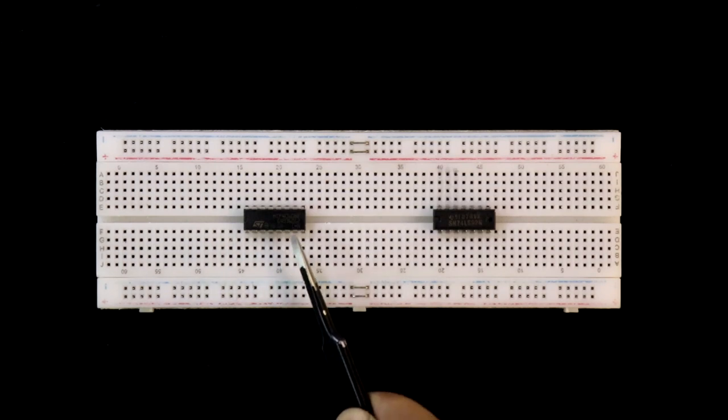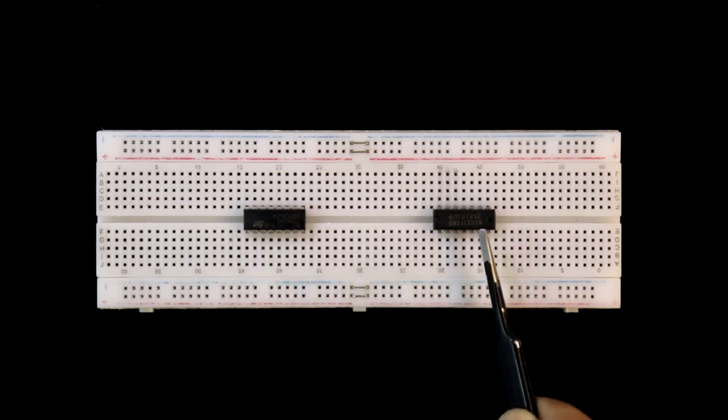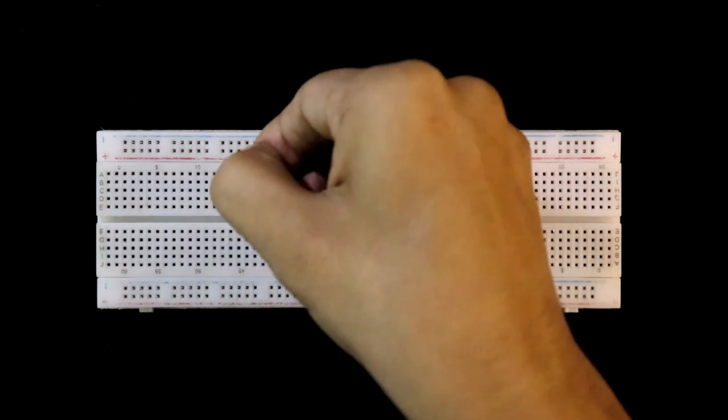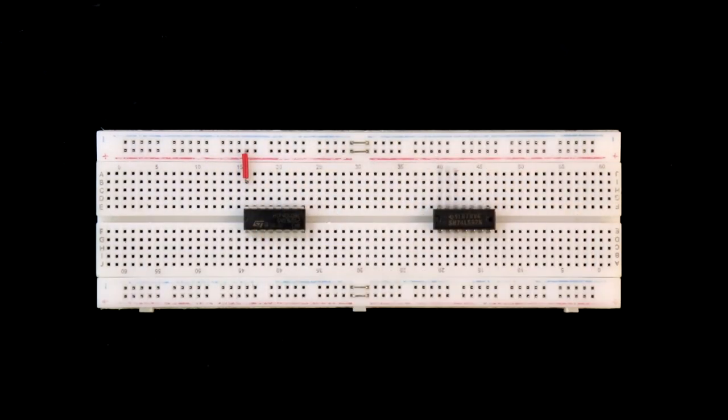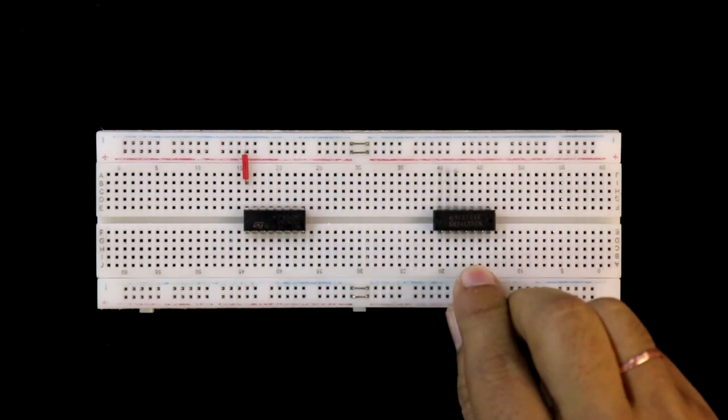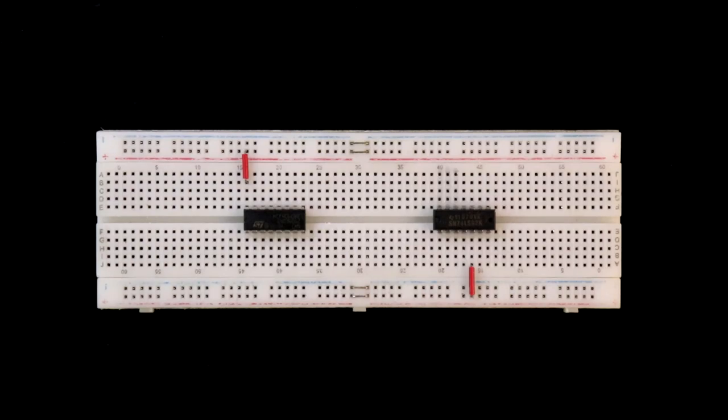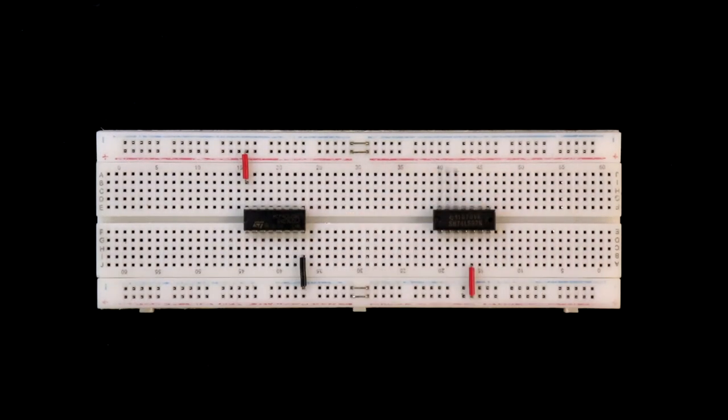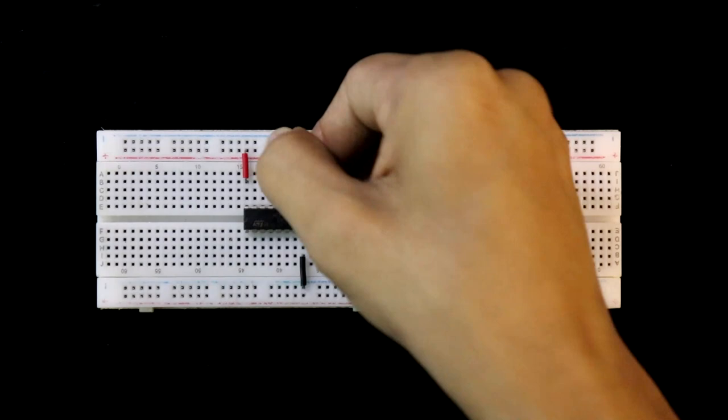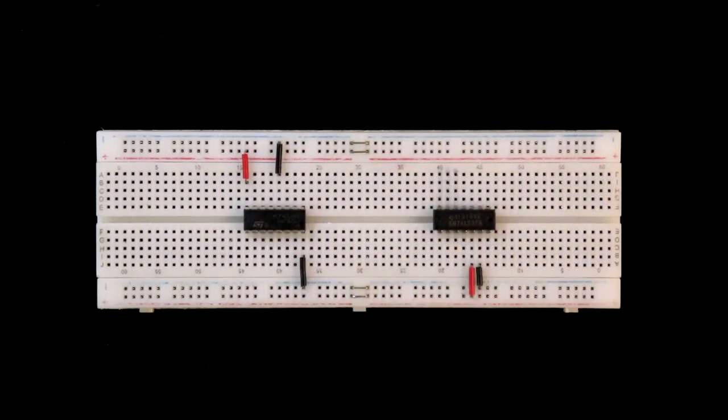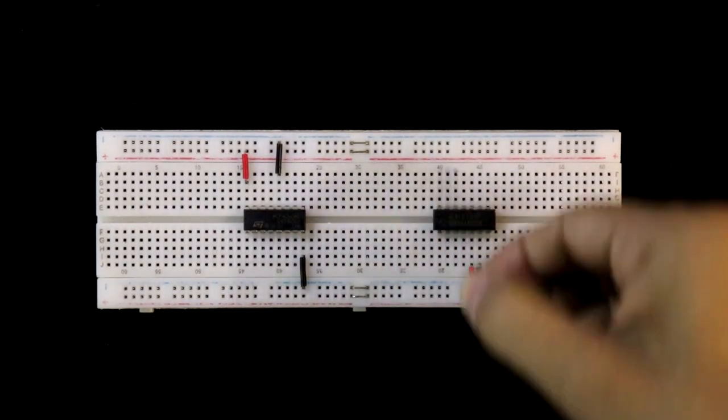Here is IC 4060 and this one is 7492. Pin number 16 is connected to the plus 5V. And for this pin number 5 is connected to the plus 5V. Pin number 8 and 12, these two are connected to the ground. And for this pin number 6, 7 and 10, these three are connected to the ground.